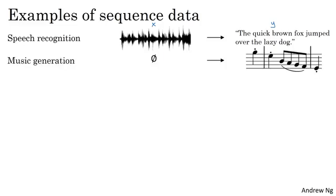Music generation is another example of a problem with sequence data. In this case, only the output Y is a sequence. The input can be the empty set, or it can be a single integer, maybe referring to the genre of music you want to generate.